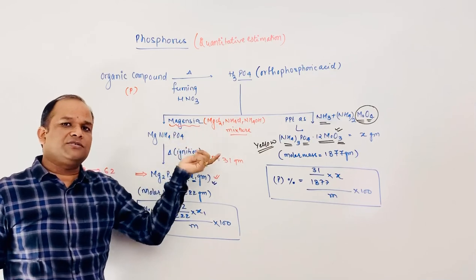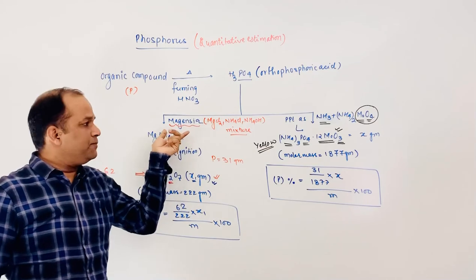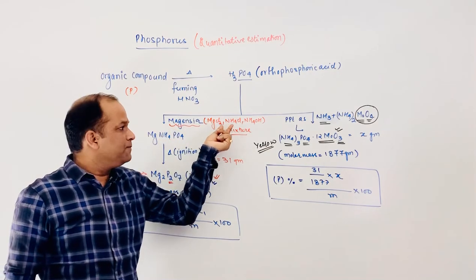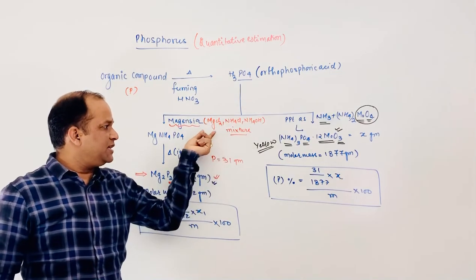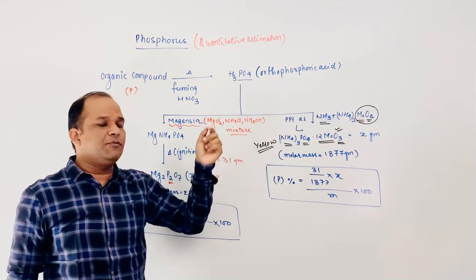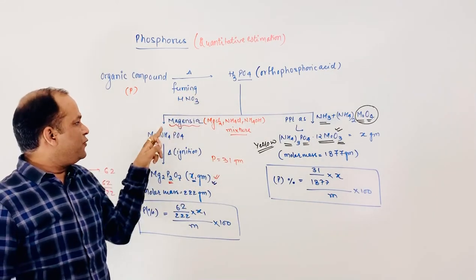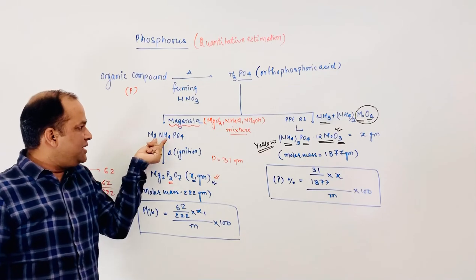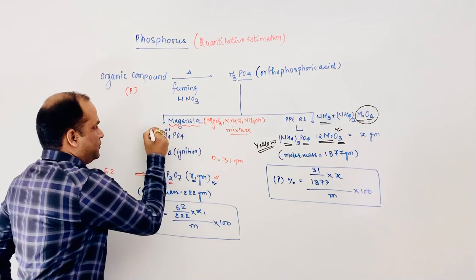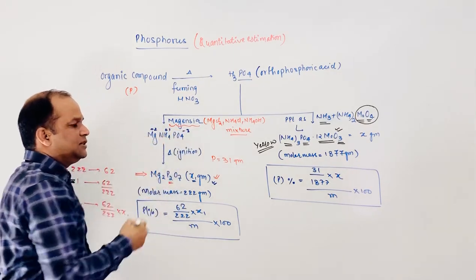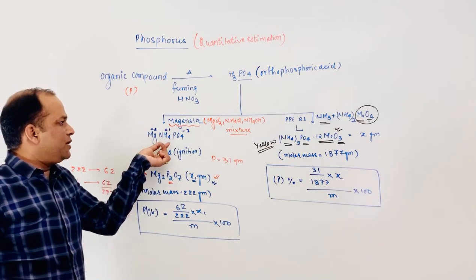Now, magnesia is not mentioned in our textbook, so we need to know about it. Magnesia is a mixture of magnesium chloride, ammonium chloride, and ammonium hydroxide. When H3PO4 reacts with this mixture, it forms MgNH4PO4 — magnesium ammonium phosphate — because the charges +1, +2, and -3 are neutralized.